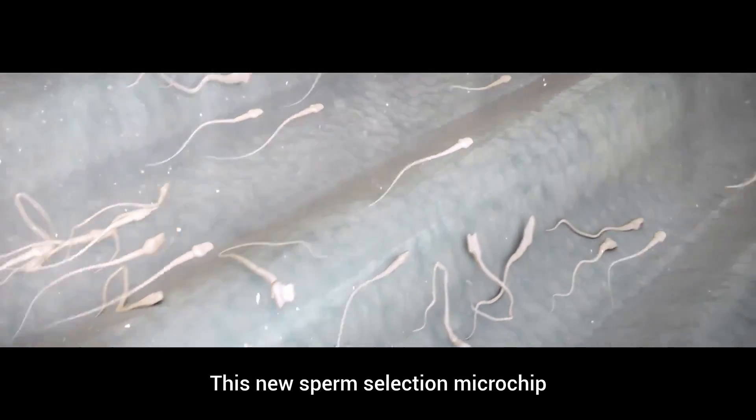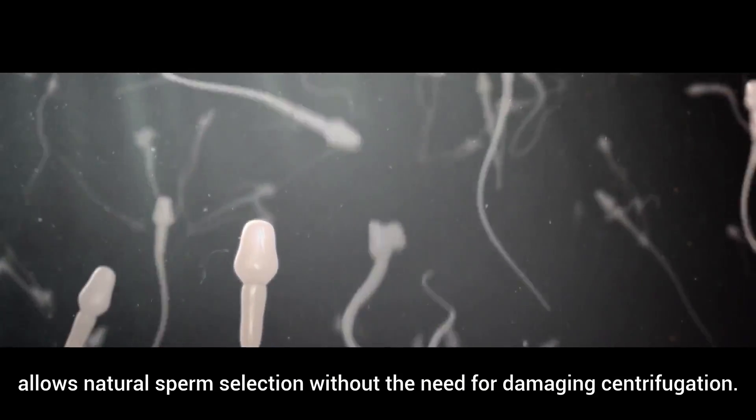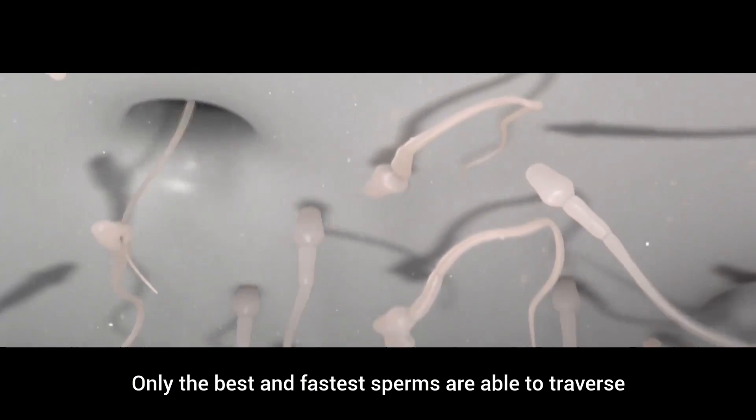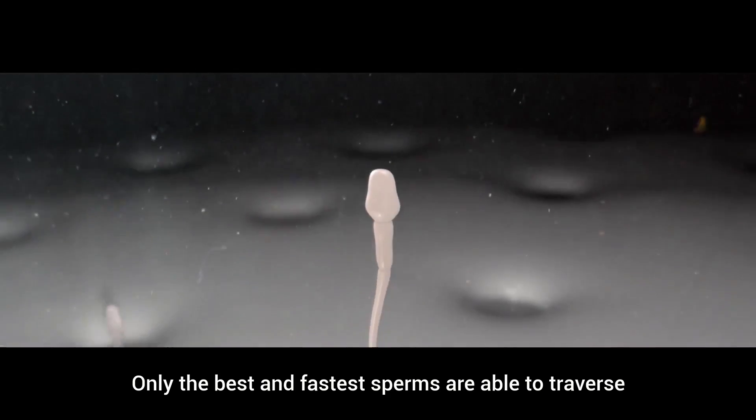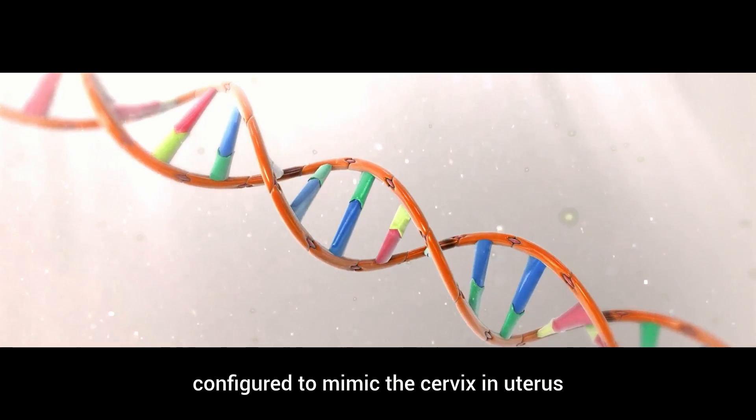This new sperm selection microchip allows natural sperm selection without the need for damaging centrifugation. Only the best and fastest sperm are able to traverse specialized grooves and micropores configured to mimic the cervix and uterus.